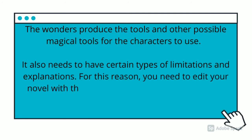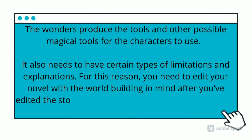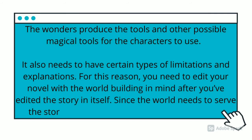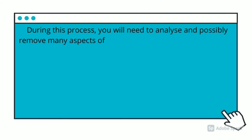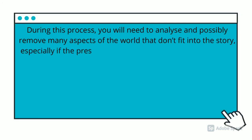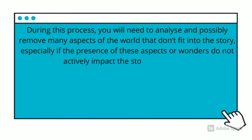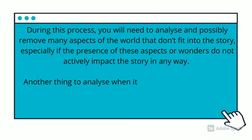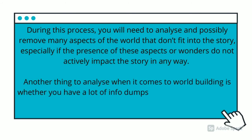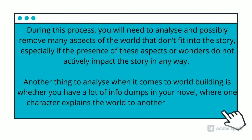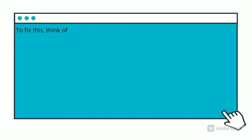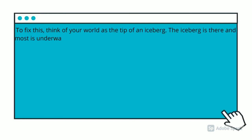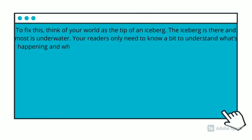Since the world needs to serve the story, it becomes second to review and edit. During this process, you will need to analyze and possibly remove many aspects of the world that don't fit in the story, especially if those aspects don't actively impact the story in any way. Another thing to analyze is whether you have information dumps in the novel — where one character explains the world to another in what seems like an endless moment. To fix this, think of the world as the tip of an iceberg. Your readers only need to know a bit to understand what's happening and why.